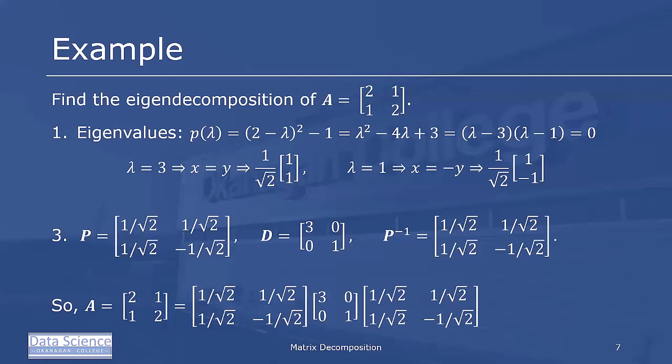Our first unit eigenvector is 1 over root 2 [1, 1]. Our second unit eigenvector is 1 over root 2 [1, -1]. So using those as our columns of P, we get [1/√2, 1/√2; 1/√2, -1/√2]. Our D is our diagonal matrix using our eigenvalues 3 and 1, and our P inverse is the transpose of P.